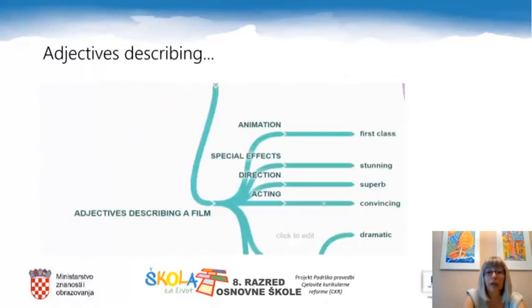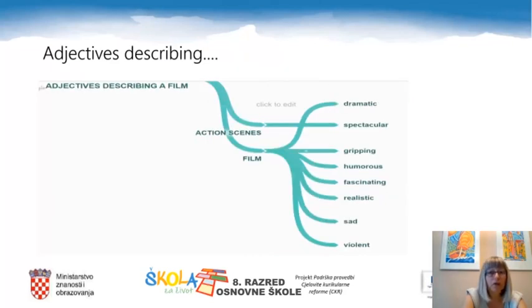We have come to adjectives describing a film. We can say that the film has first-class animation, stunning special effects, superb direction, and convincing or spectacular acting. We can also say that it has gripping, dramatic, or exciting action scenes, and describe a film as humorous, fascinating, realistic, sad, or violent.